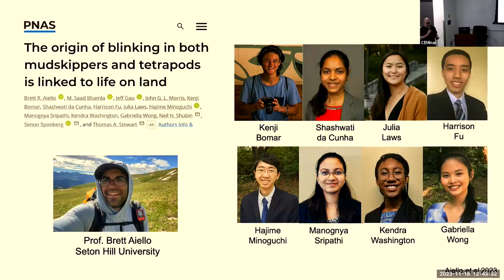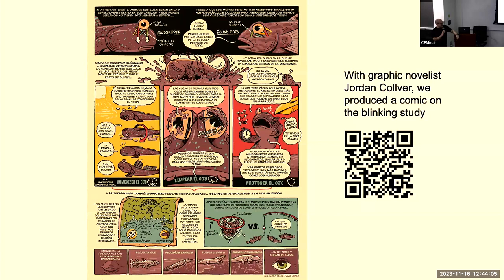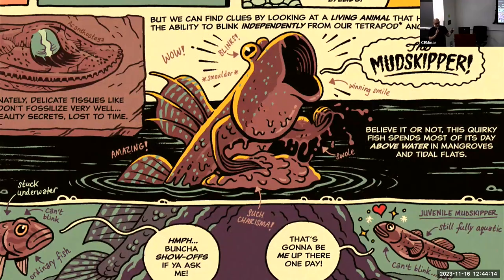This study was a collaboration with myself and Brett Aiello, then at Georgia Tech and now faculty at Seton Hill University, along with a huge team of undergraduates who designed really important components of these experiments. We also collaborated with award-winning graphic novelist Jordan Culver, who created a series of panels to communicate these findings broadly. If you're interested, please share it — especially with kids. The way graphic novelists build narrative using space, text, and sequence from left to right and top to bottom is really impressive, and I found it very informative as a scientist.